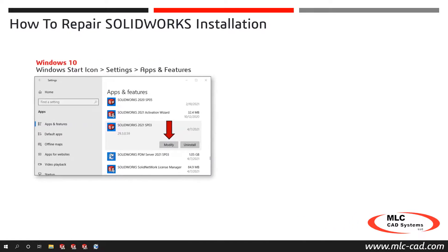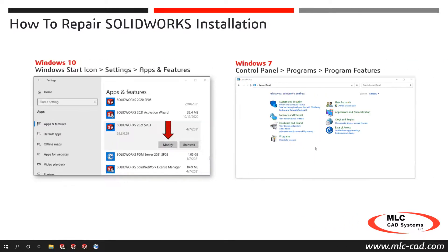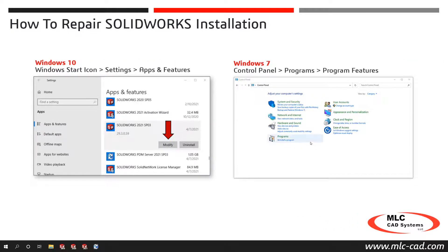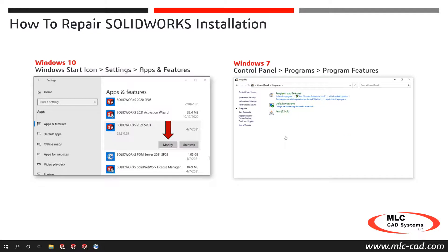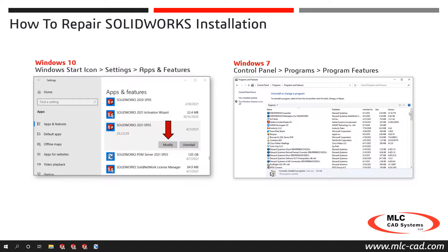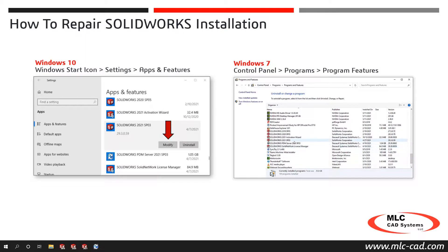For Windows 7 users, navigate to the Windows Control Panel, Programs, Program Features, locate the SolidWorks application, and then select Change to launch the SolidWorks Installation Manager.